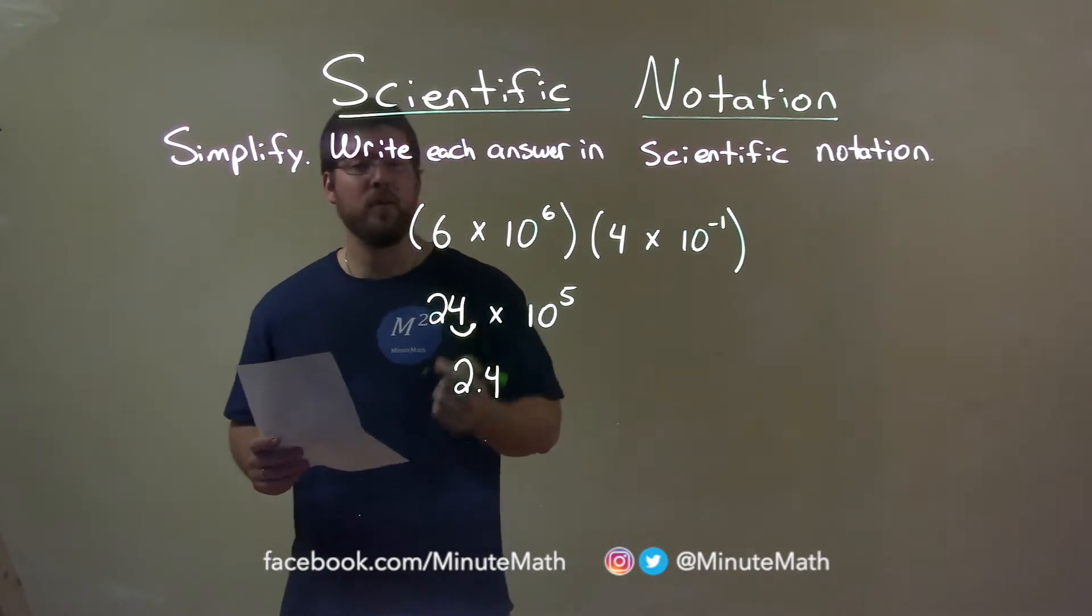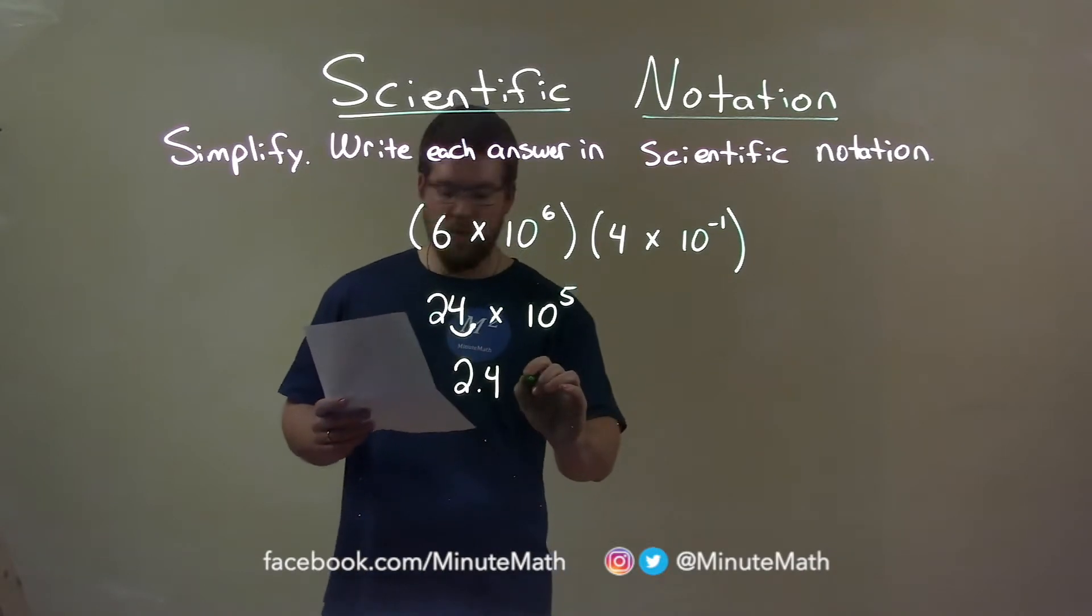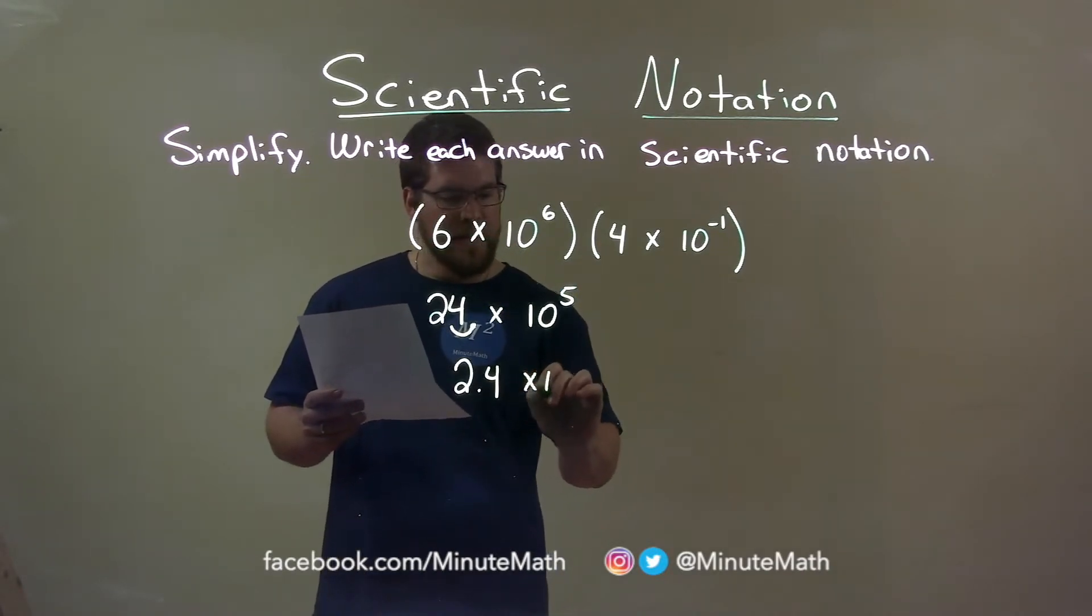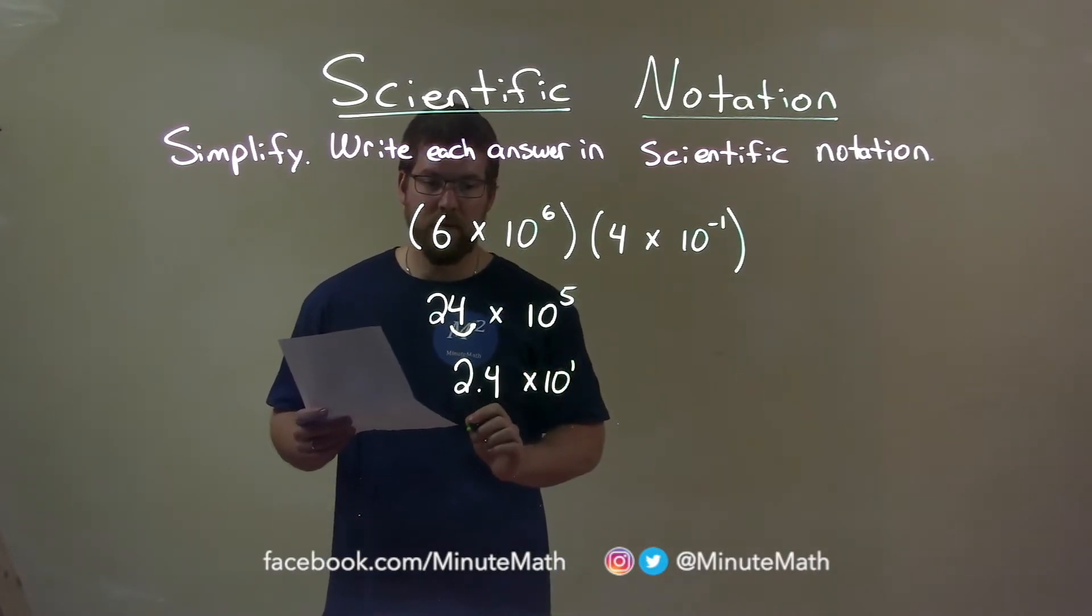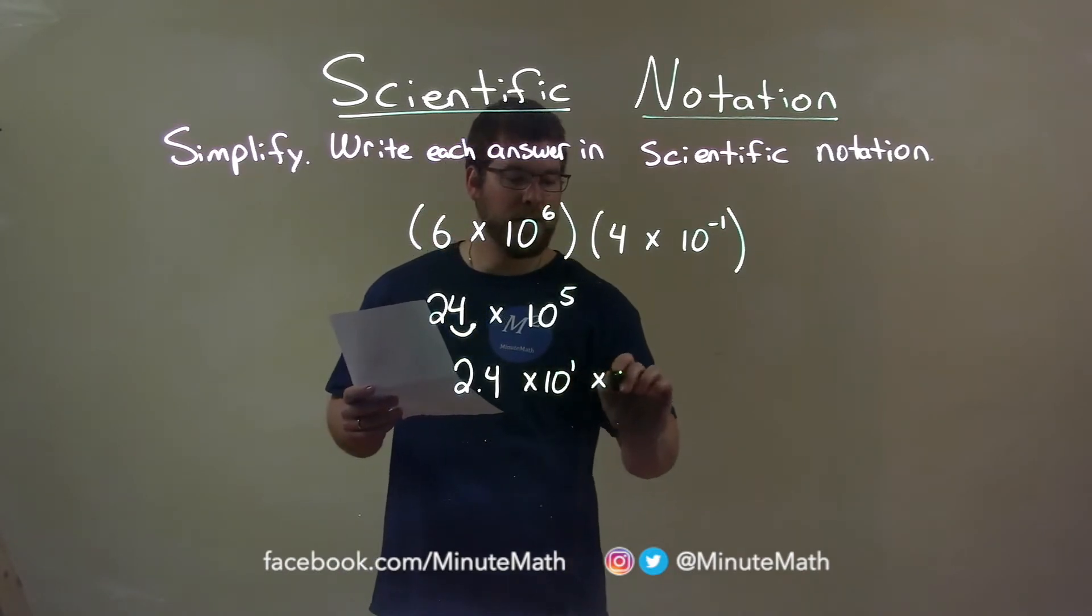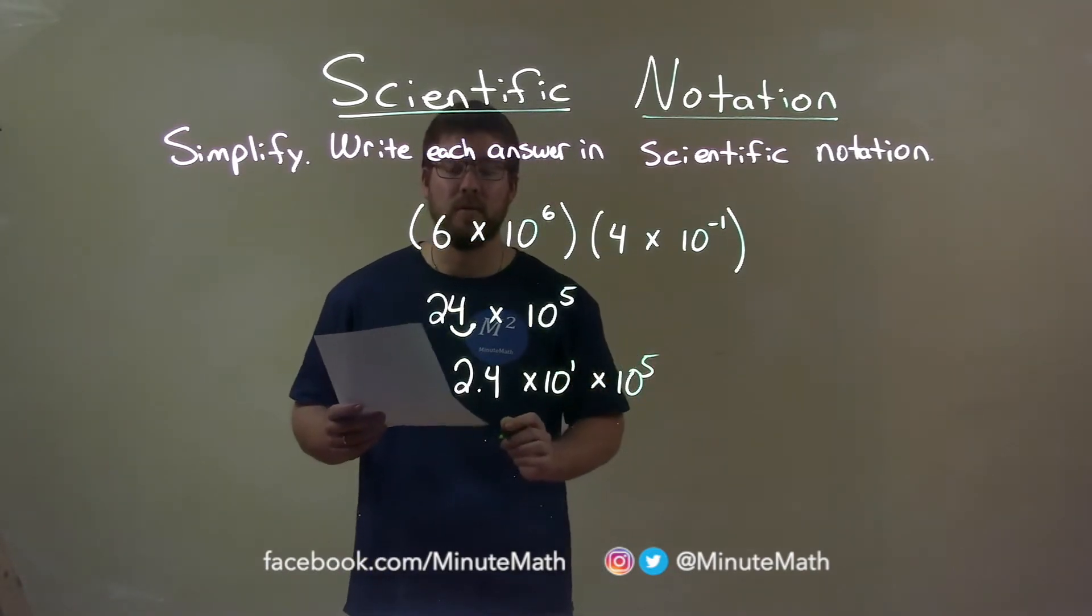Now, it comes down as 2.4, but to counteract that decimal moving one spot to the left, we have to multiply that by 10 to the first power. We bring down now 10 to the fifth power, and let's continue to simplify.